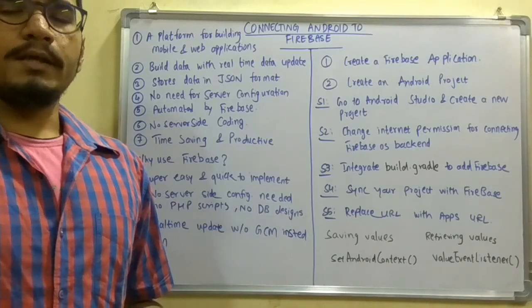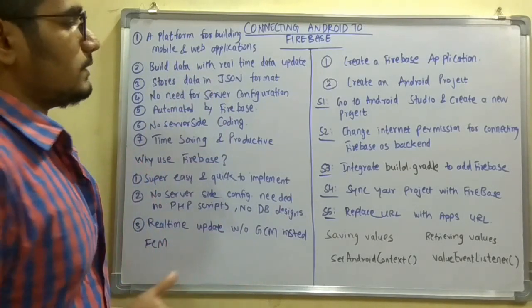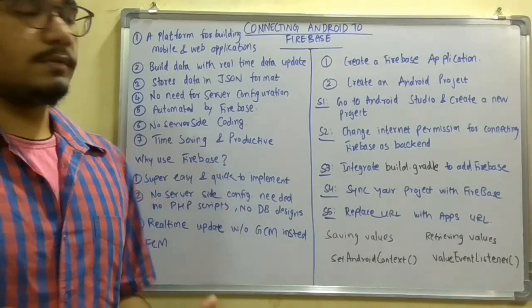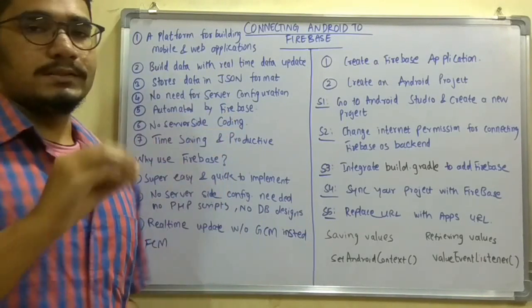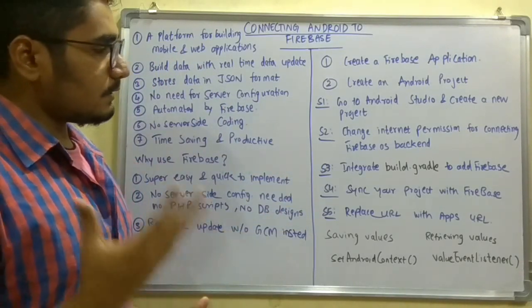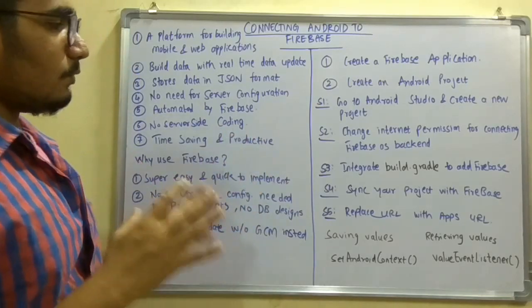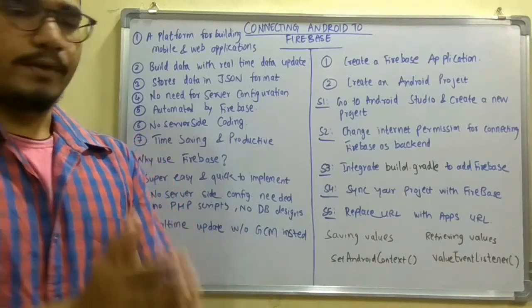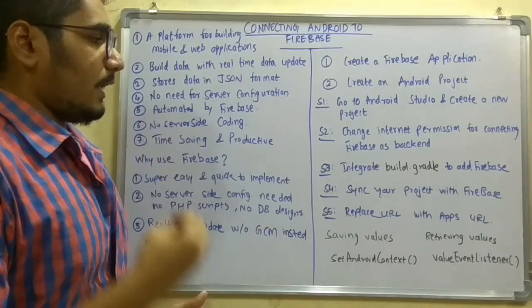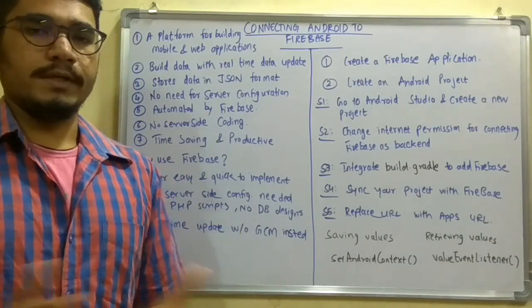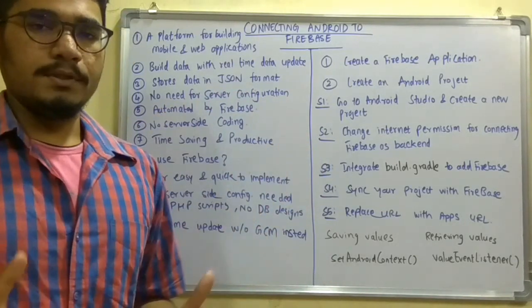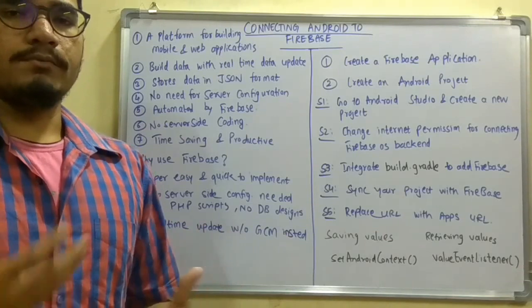After you are done with the Firebase application, you have to create an Android project on Android Studio. You need to change the internet permission — earlier you might have been using MySQL, MongoDB, or some other databases, but for Firebase especially you need to change the internet permission and configuration for accessing Firebase as its backend. The third and most important step is to integrate your Android project with Firebase. For that you need to have a build.gradle file that you integrate with Firebase, and after that you sync your project with the Firebase application you created. Then replace the URL from the Firebase application and link it with your Android application.